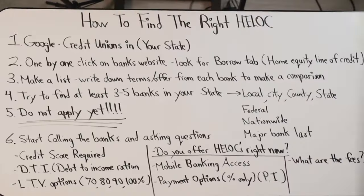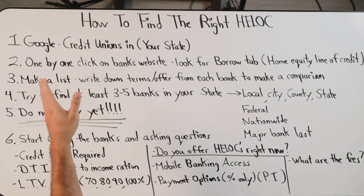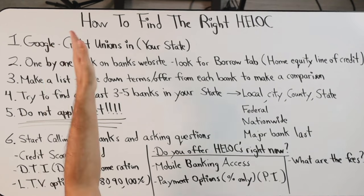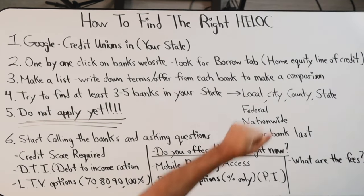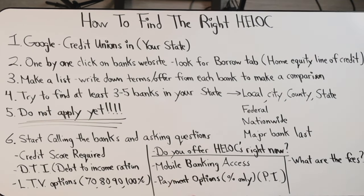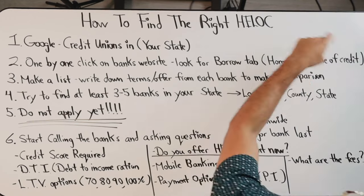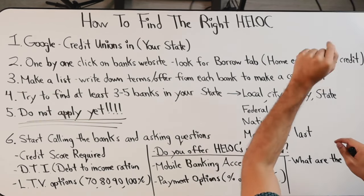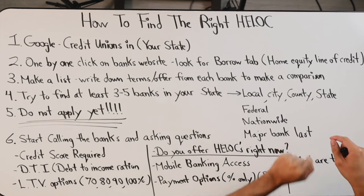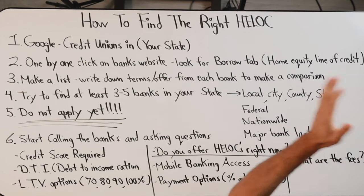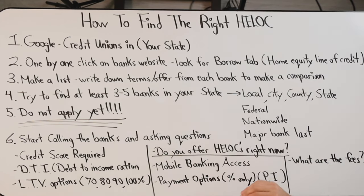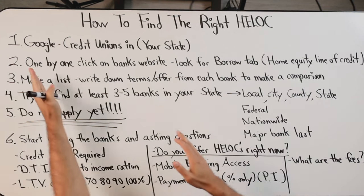What's the very first step? Step one: Google. Get on your computer or phone and search 'credit unions in [your state].' Start there. Once you're there, hit the 'show more' button and start clicking on all the different banks. You're going to have a bunch of tabs open and go to all of those different bank websites one by one.